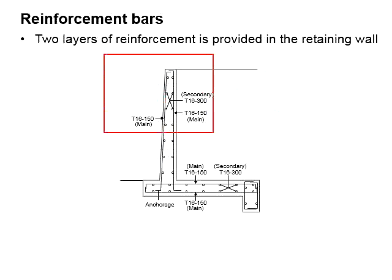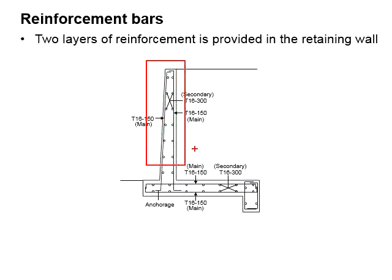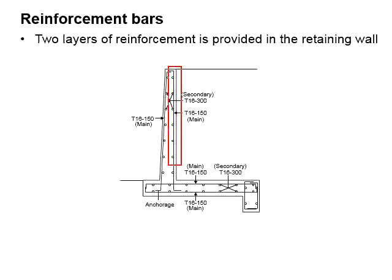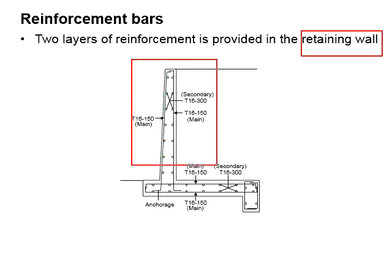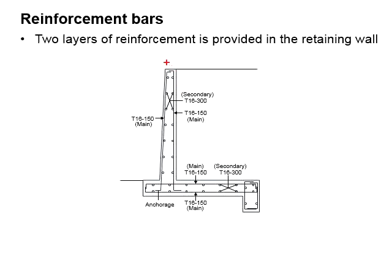As for the reinforcement, typically two layers of reinforcements are provided. Each layer of reinforcement has a main reinforcement and secondary reinforcement. The retaining wall is designed similar to a cantilever slab. Therefore, the main reinforcements are typically arranged to have a maximum depth in order to maximize the efficiency of the retaining wall.